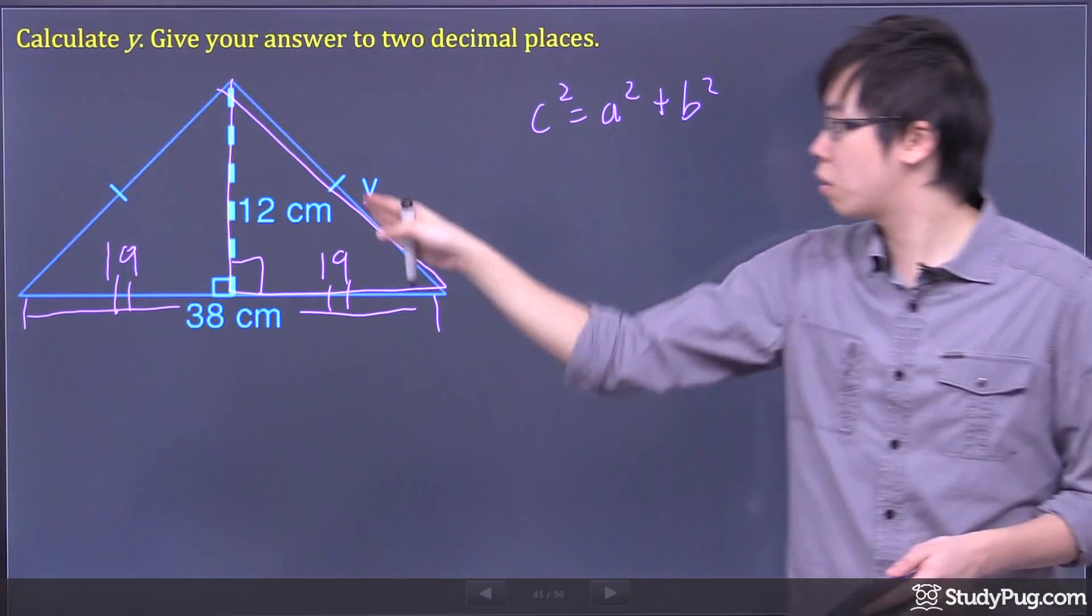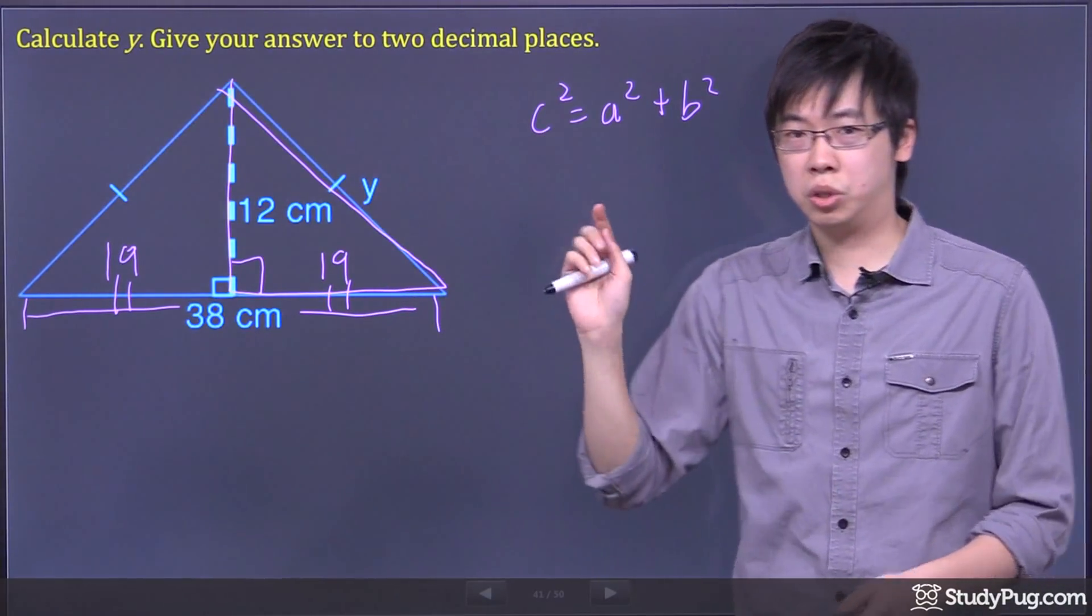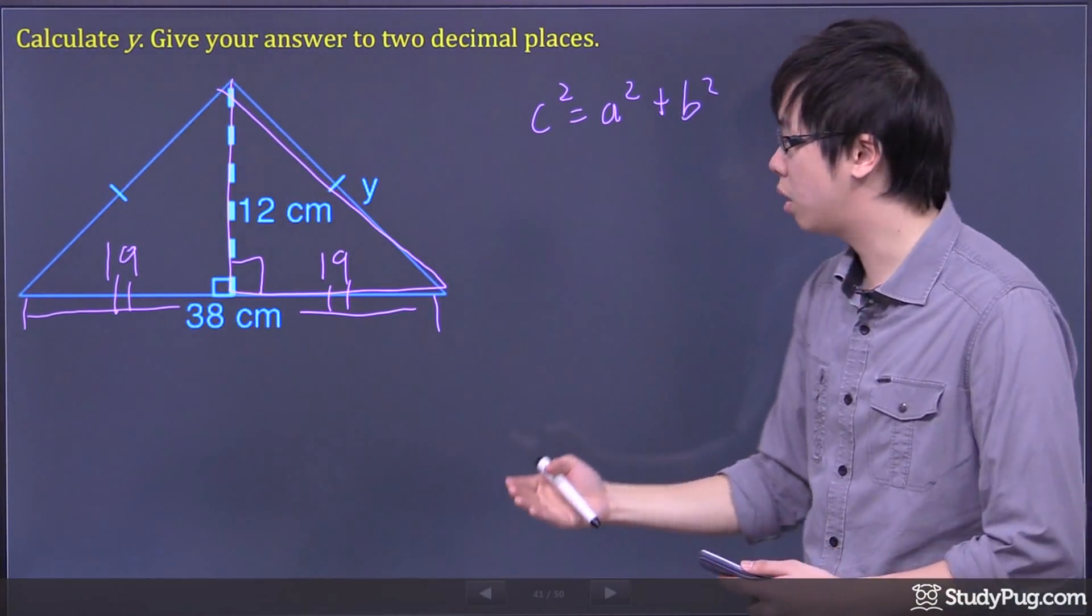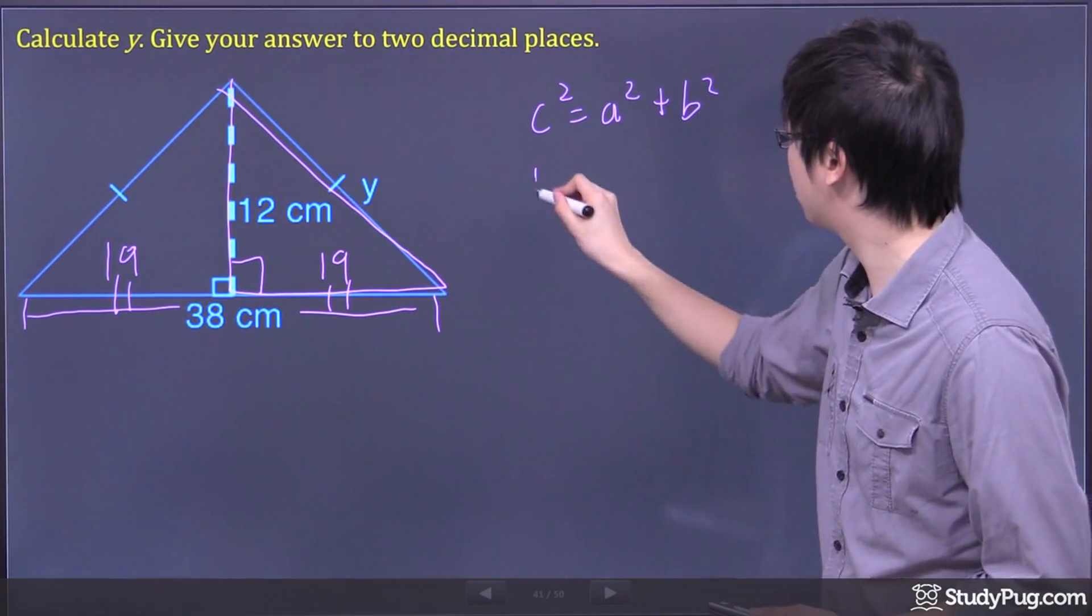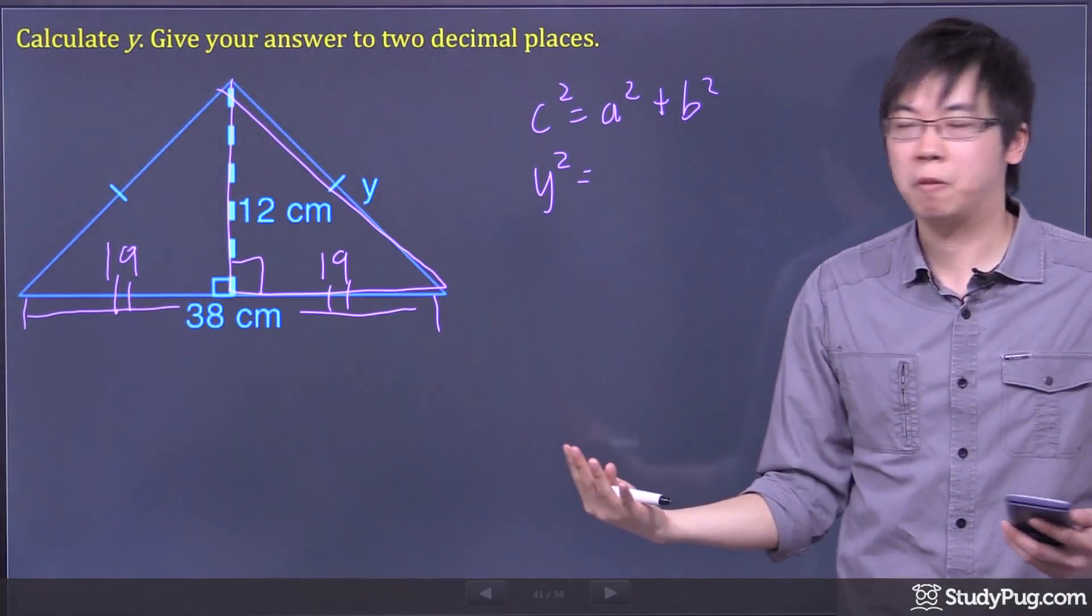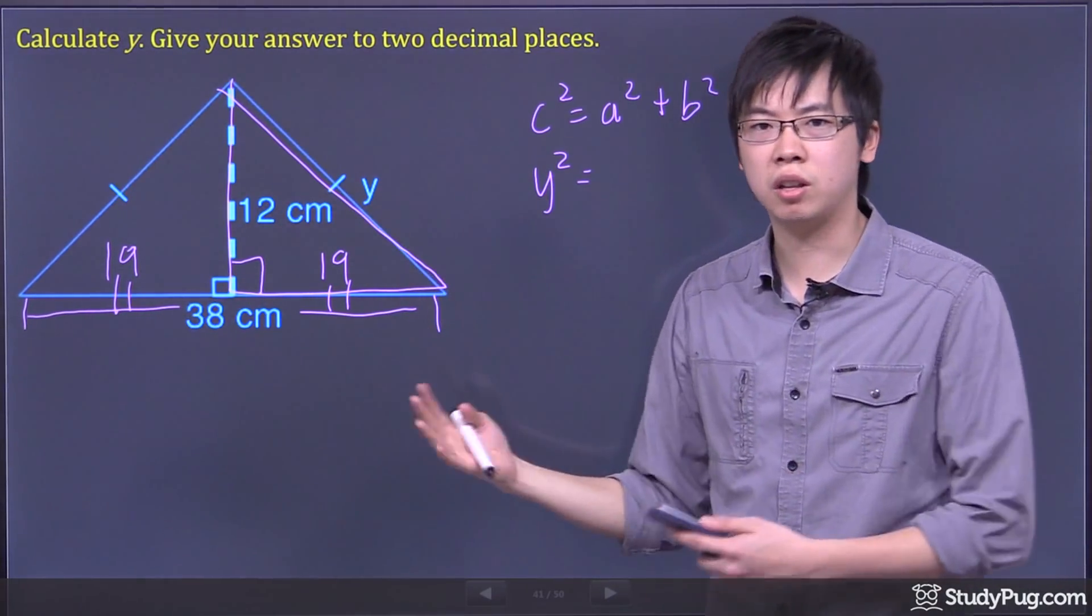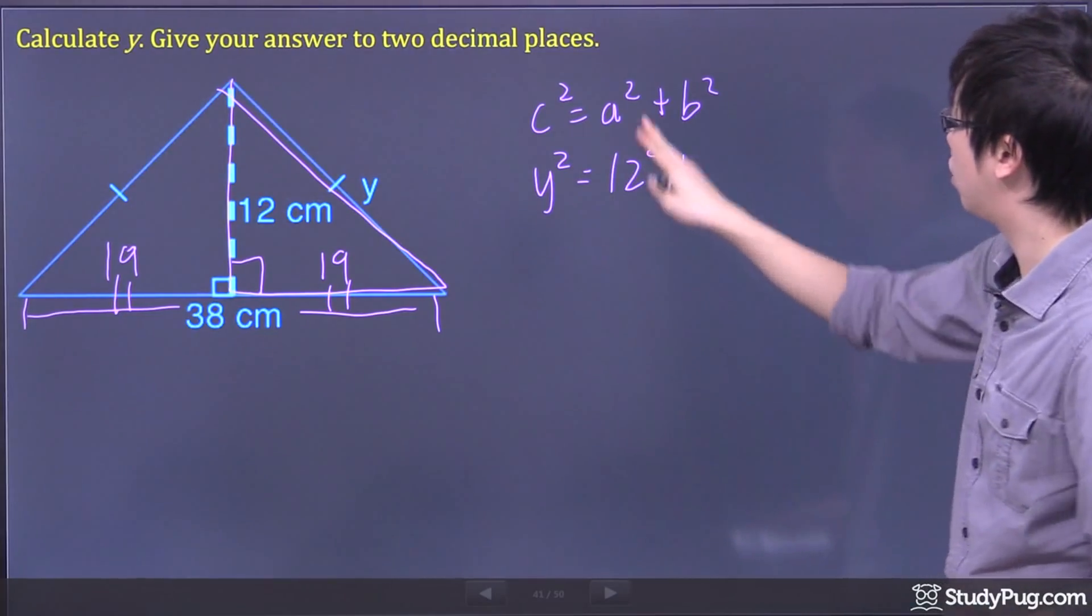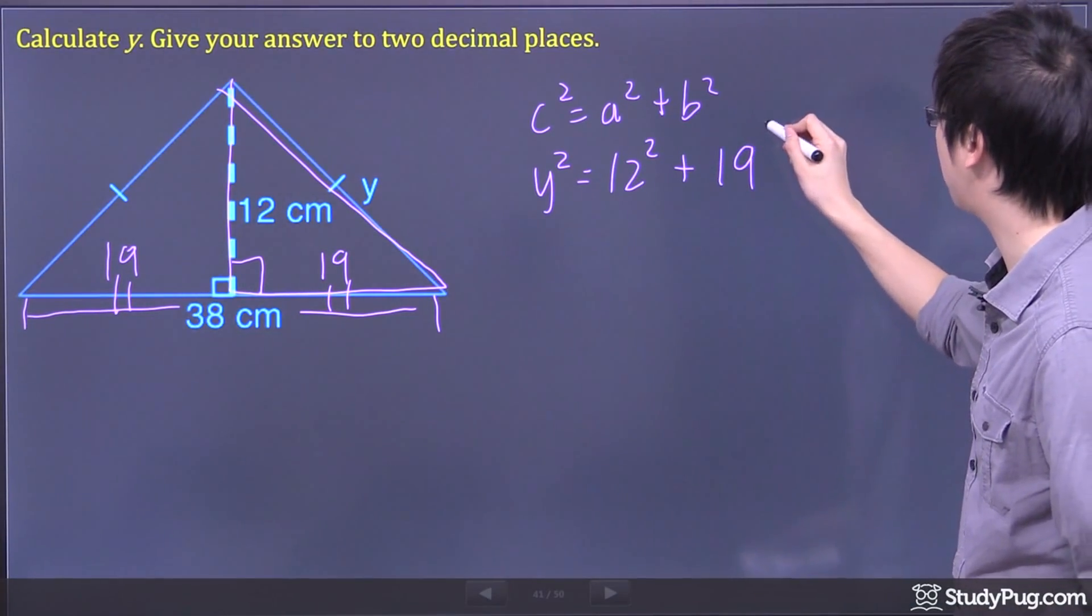Then, you look at the diagram one more time. The C, which is the hypotenuse of the triangle, is represented by the Y over here. So there's your Y squared. The A and the B can be either one of them. You can put the 12 for A or 19 for A, it doesn't matter. Let's say I put the 12 for the A and the 19 for my B.